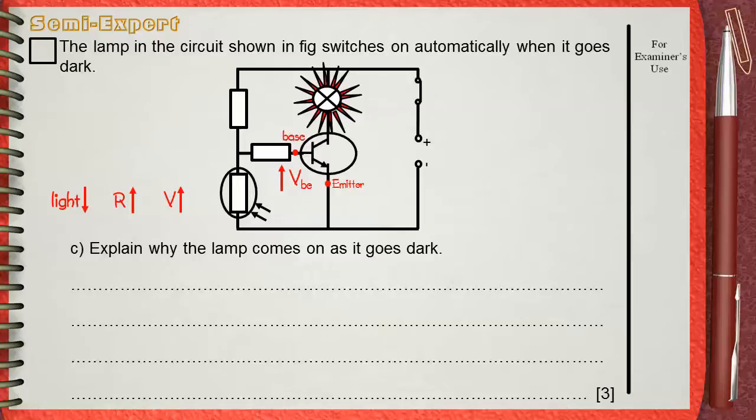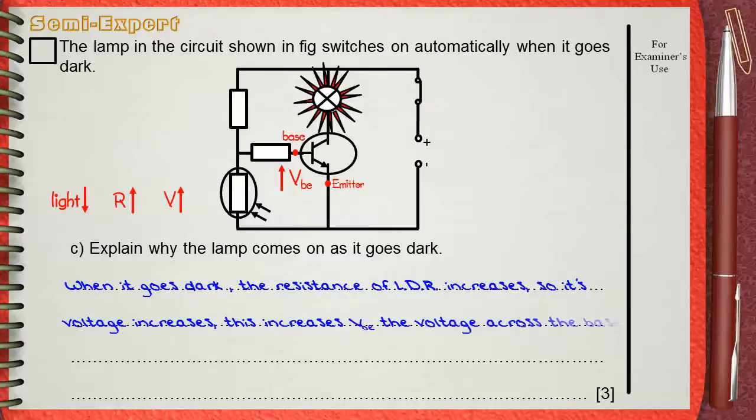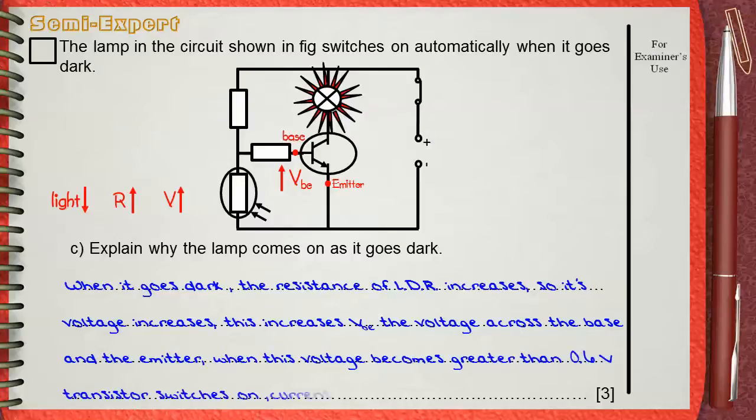Let's see how we can say this in a simple answer. When it goes dark, the resistance of LDR increases, so its voltage increases. This increases VBE, the voltage across the base and the emitter.